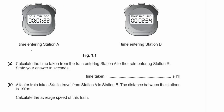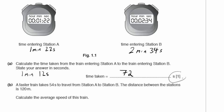The time it comes in to station A, 1 minute and 22 seconds has elapsed. It enters station B after 2 minutes and 34 seconds have elapsed. So the difference between those two times is just 1 minute and 12 seconds, which is 72 seconds. Note that it wants the answer in seconds.